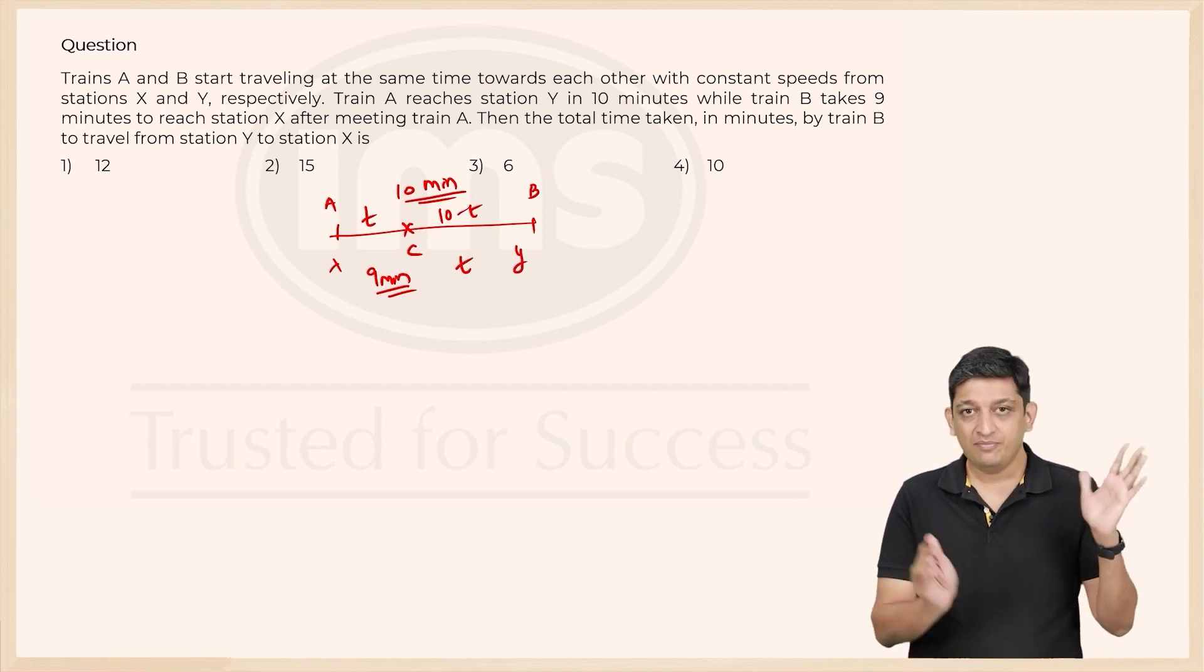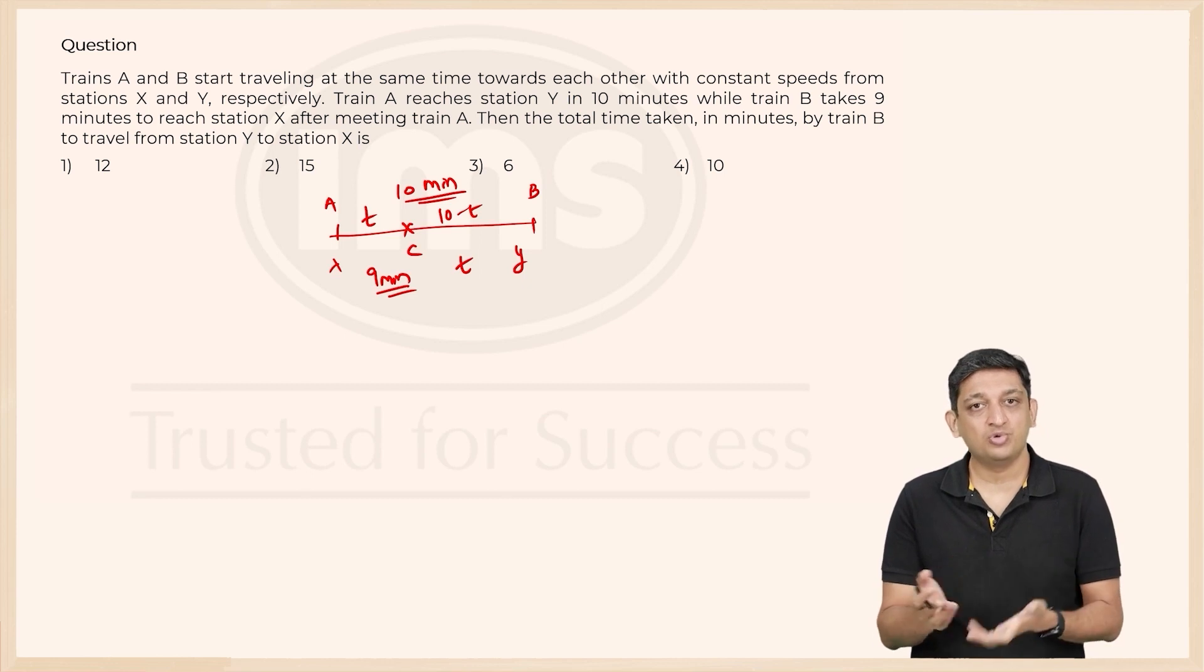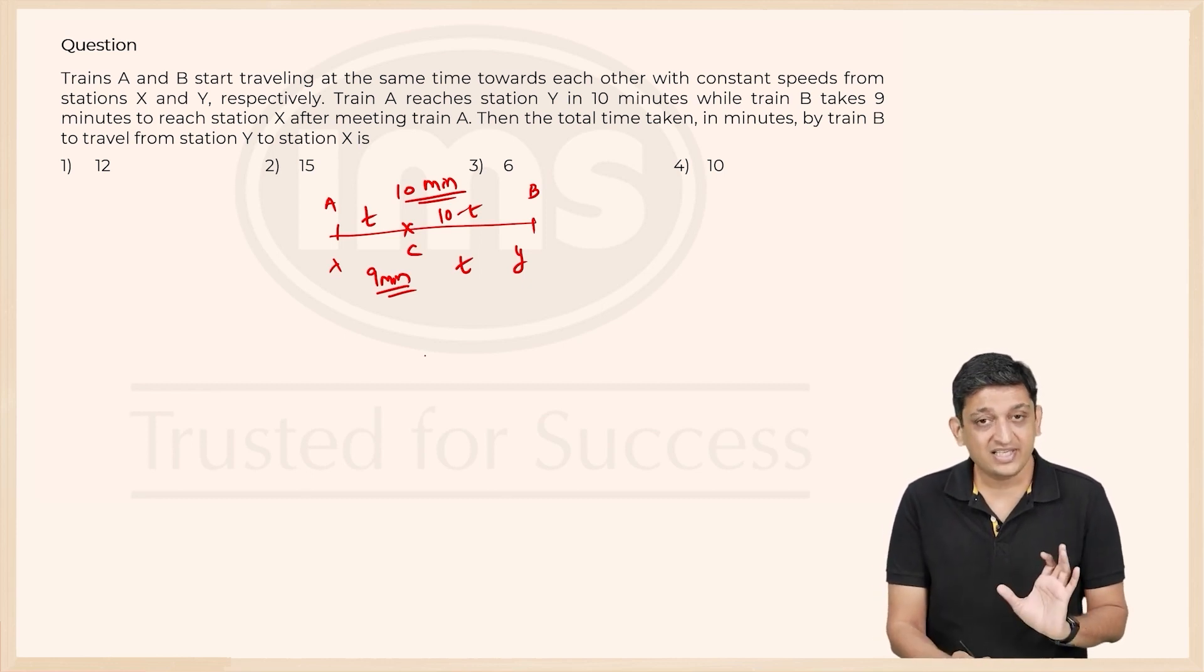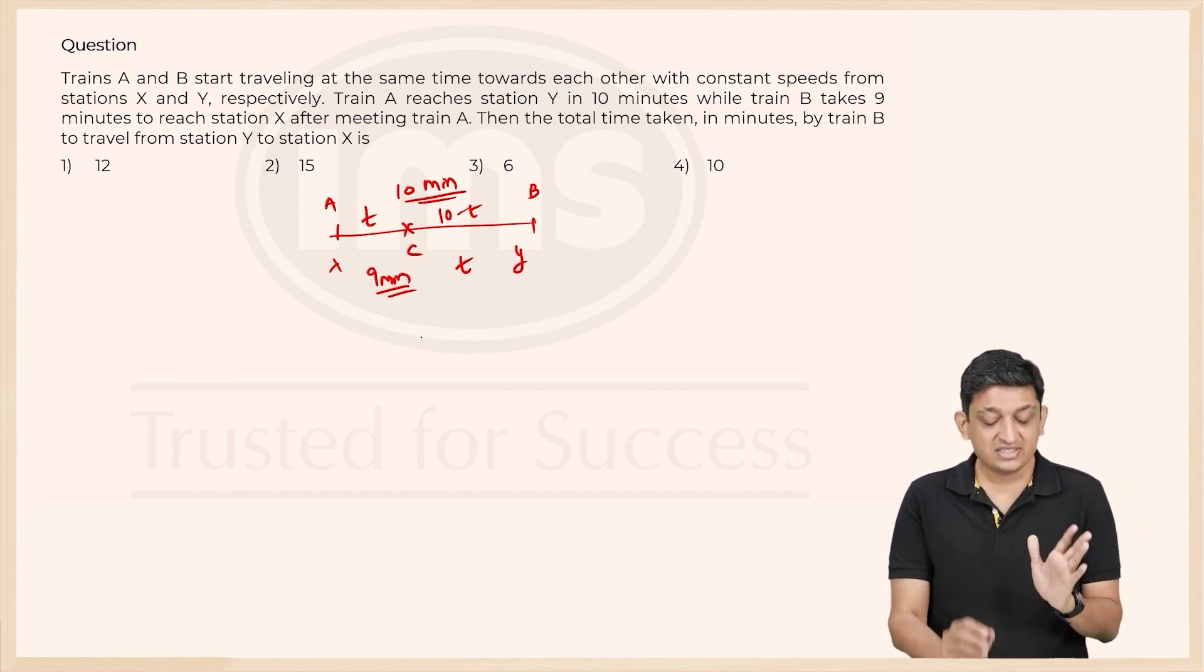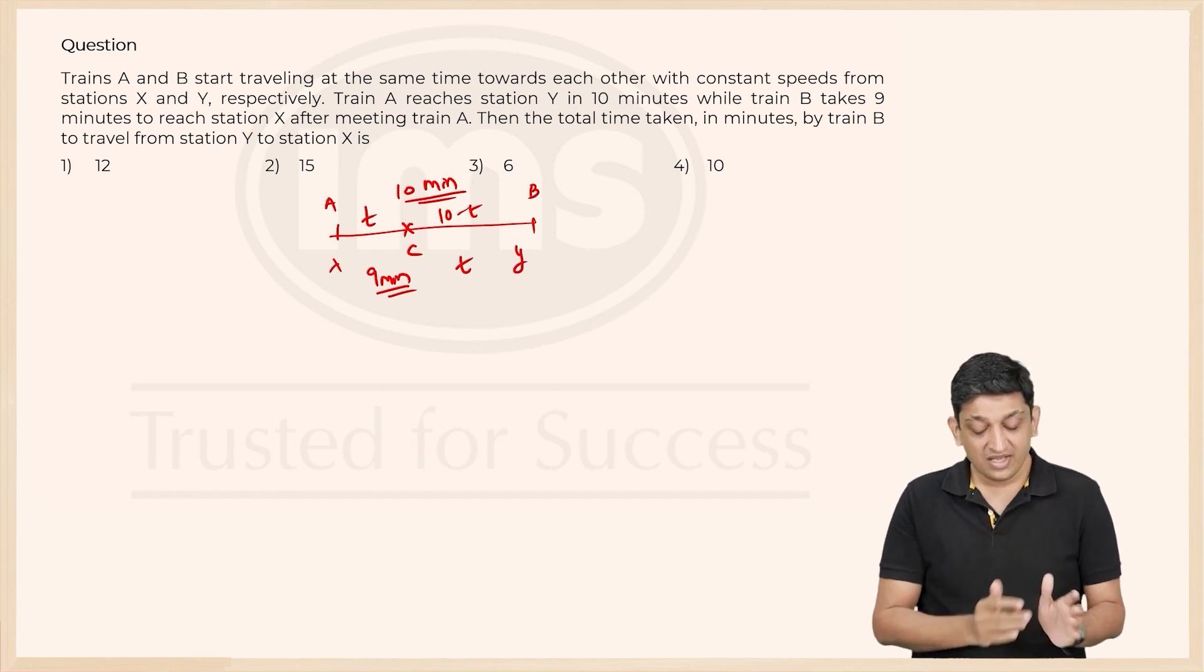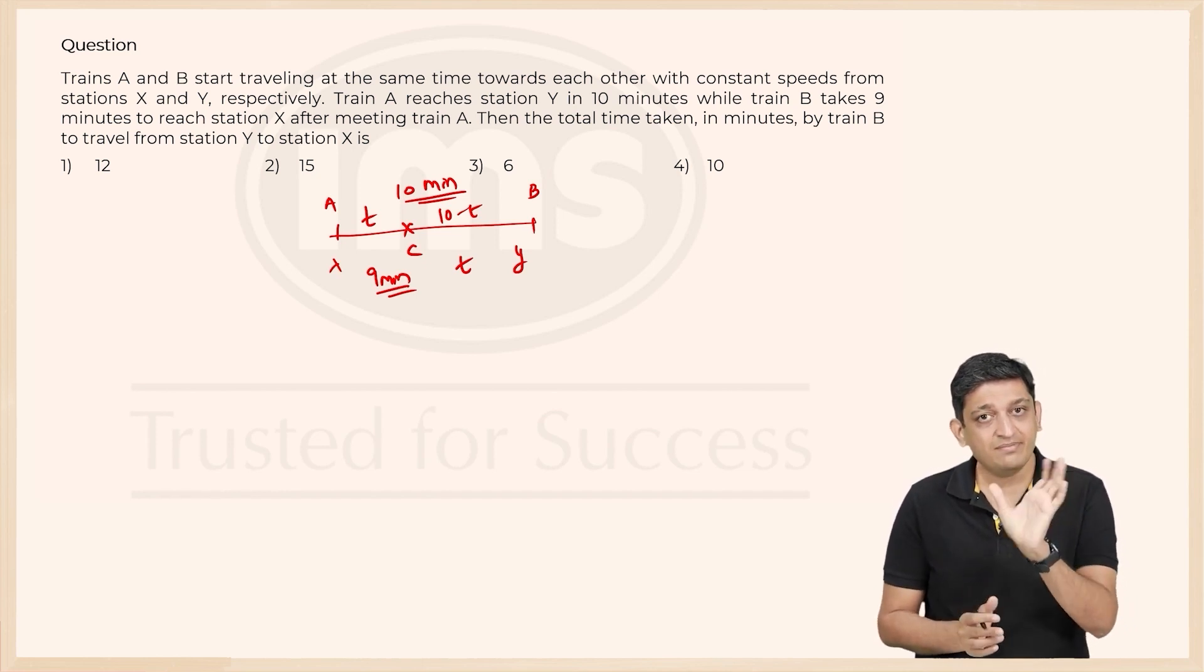We also know that they have been traveling at a constant speed throughout. So if you look at the distance traveled by train A from A to C and the distance traveled by train B from C to X, we can say that they have covered the same distance.